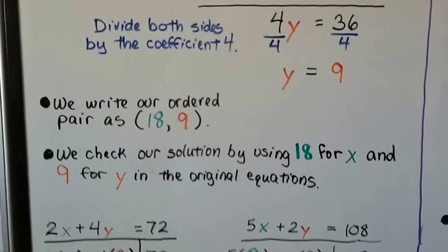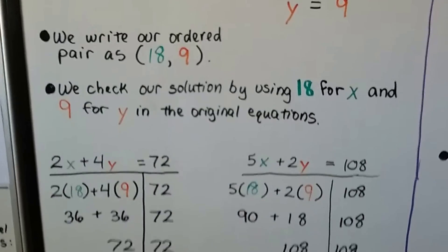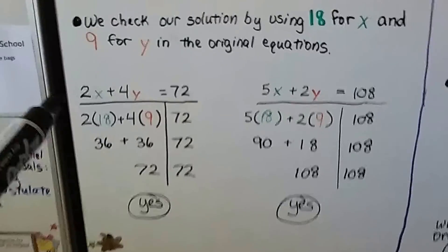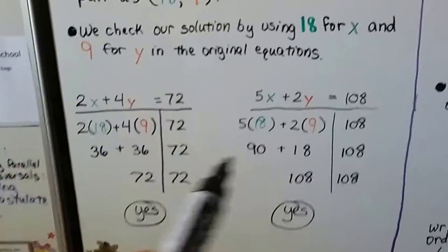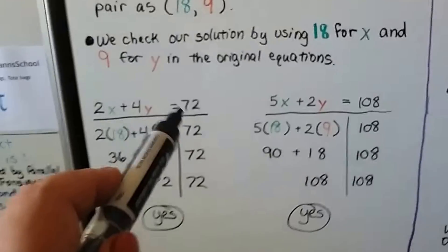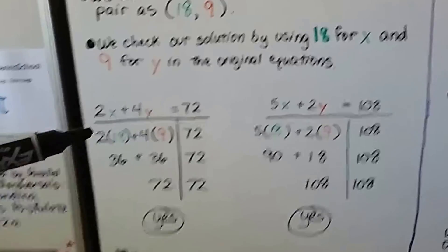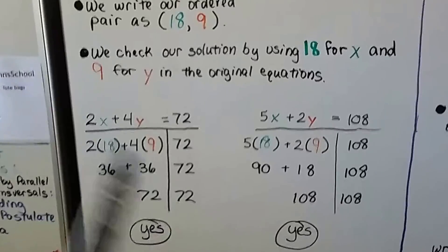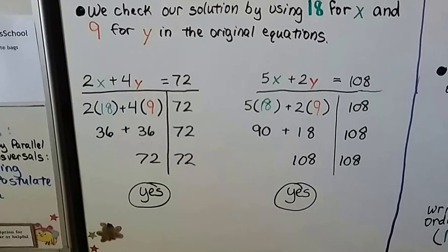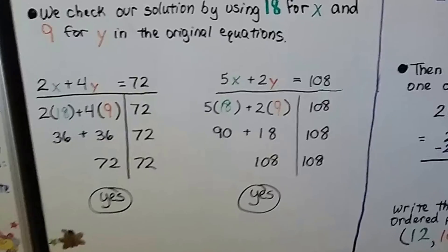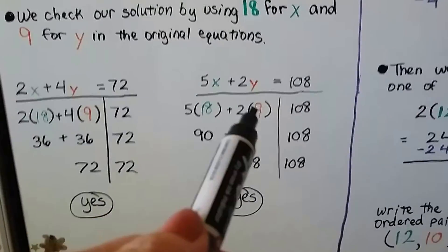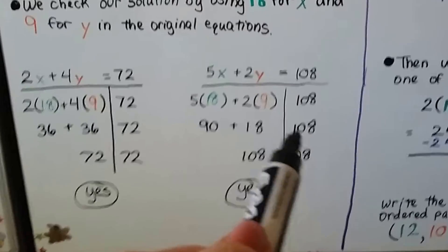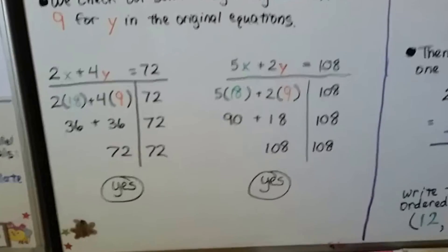We write our ordered pairs as 18 for x and 9 for y. We check our solution by using 18 for x and 9 for y in the original equations. And here's our tables for checking it. So we've got 2x plus 4y equals 72. And 5x plus 2y equals 108. We draw a line. We put a line coming down vertically from the equal sign. And we put in our values for x and y. We put that it equals 72. We simplify this to 36 plus 36 is 72. And we get 72 on the left and 72 on the right. So we know that it's correct. We do the same thing for the second equation. We put 18 for x and 9 for y. We get 108. This is 5 times 18 is 90. This is 18. We add them. We get 108. So 108 is 108. So yes, it checked out okay.